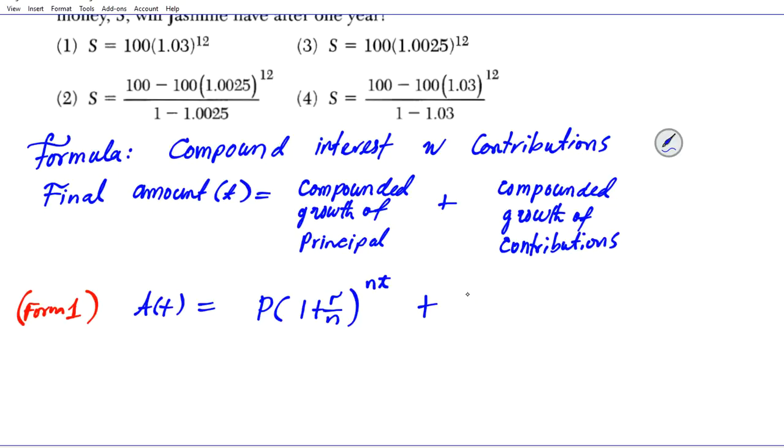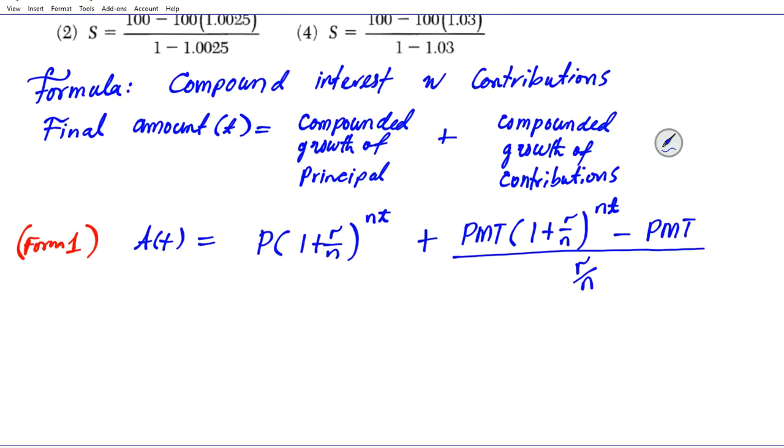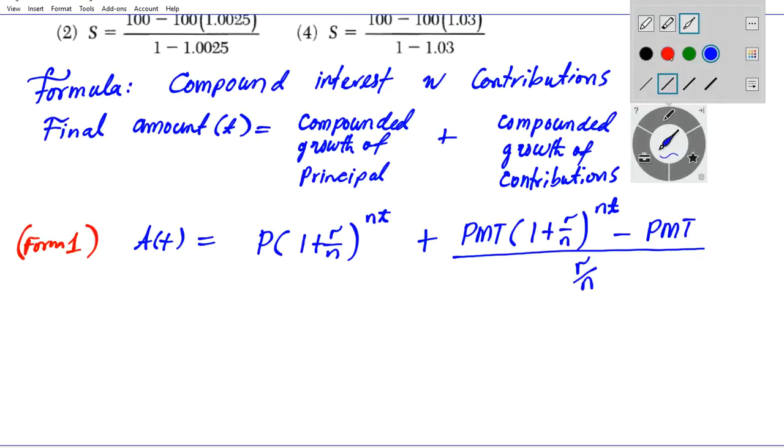But we have contributions being made, so we have to compensate for that too. That's given by the payment PMT times (1 + r/n)^(nt) minus the payment, divided by r/n. This is one form for computing the amount over T years.